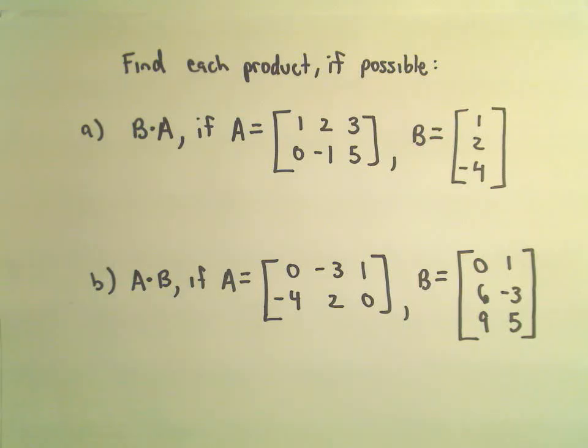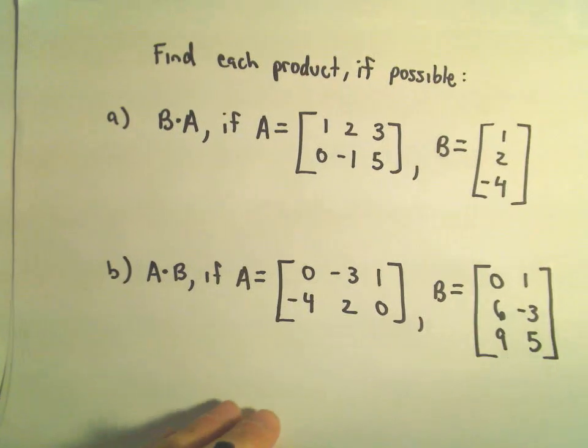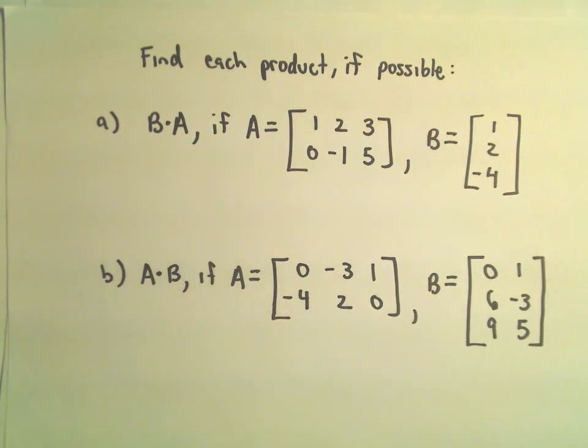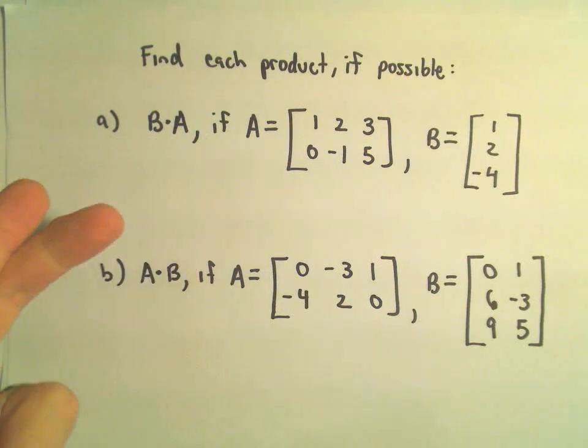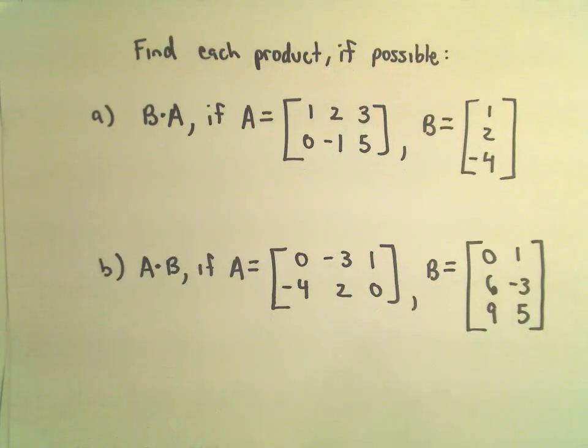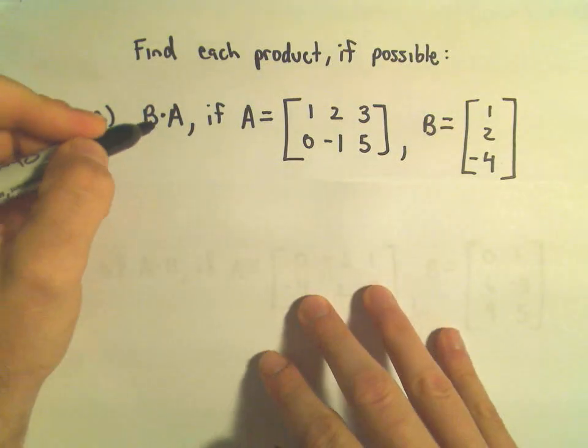Okay, so a couple remarks. One thing, the order in which you multiply matrices together is very important. You may be able to do, for example, B times A, but if you reverse the order, A times B, one of two things can happen. Either you may get something very different, or you may not be able to multiply at all.